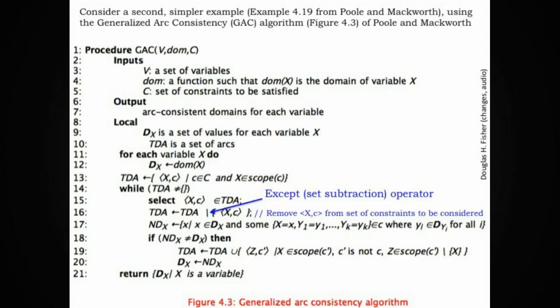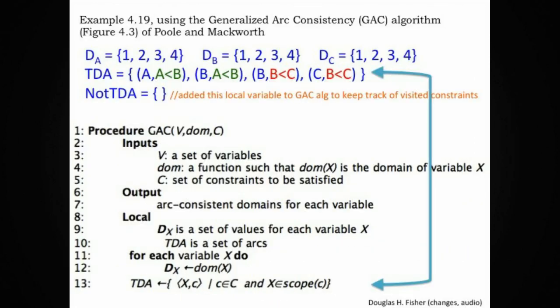Even though we've looked at solving constraint satisfaction problems through search, there are other approaches — often framed as search but not always — for solving or simplifying CSPs. The generalized arc consistency algorithm, the GAC algorithm, is an example of an approach used to simplify constraint satisfaction problems. We'll go through this with a simpler example, iterating through constraints and their implications for variables one at a time.